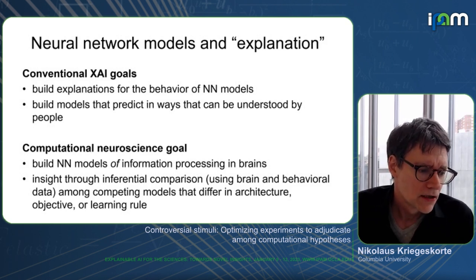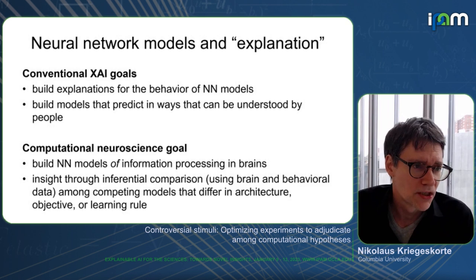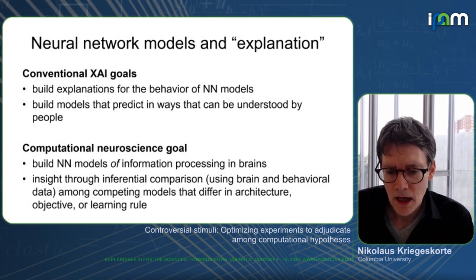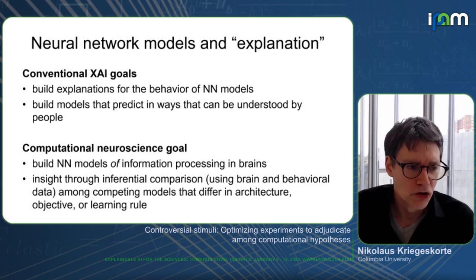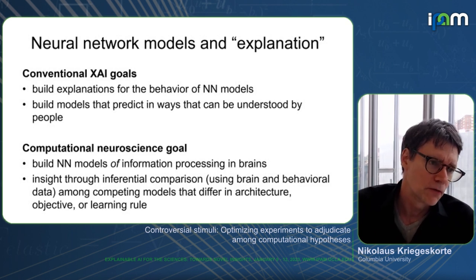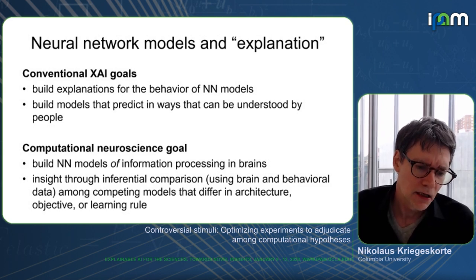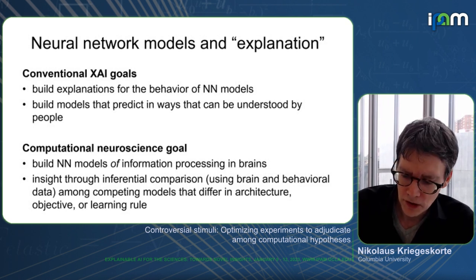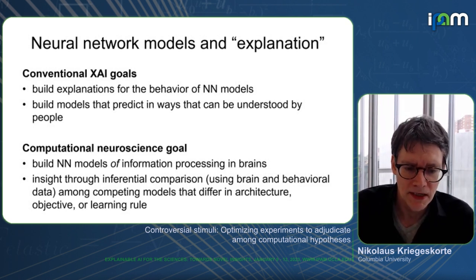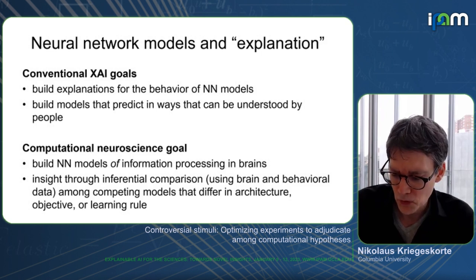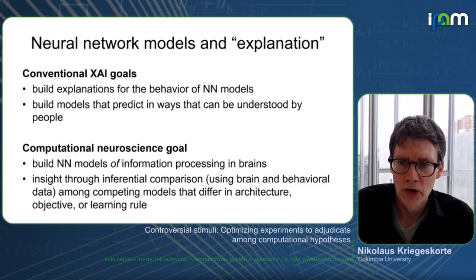The insight comes through inferential comparisons in the light of scientific data — measurements of brain activity and behavioral responses — between different neural network models that can be qualitatively different. For example, we might have a feedforward network and a recurrent network, both trained on the same visual task. We compare these as models of biological brain processing and hope to make scientific progress through these inferential model comparisons.